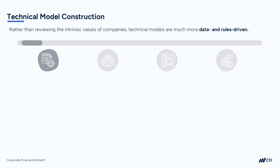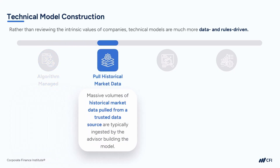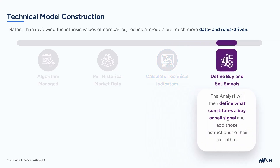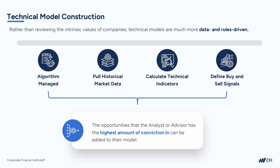Often, technical models are built and managed by algorithm, and are frequently built using programming languages like Python and R. At a high level, a massive volume of historical market data is typically ingested by the analyst or advisor building the model, pulled from a trusted market data source like Bloomberg or Reuters. This data is then used to calculate and highlight a number of technical indicators, which are pattern-based signals produced by the price, volume, and open interest of a security or contract. The analyst will then define what constitutes a buy or sell signal and add those instructions into their algorithm. This is how trade ideas are generated, and the opportunities with the highest conviction can be added to their model.